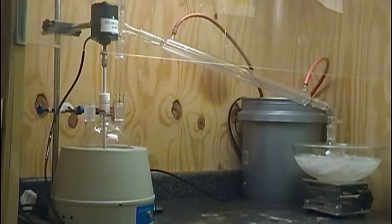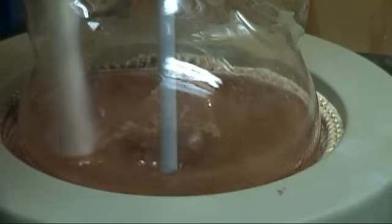And last, set up the optional overhead mixer. Now turn up the heat, start the mixer, and slowly add the sodium bromide.